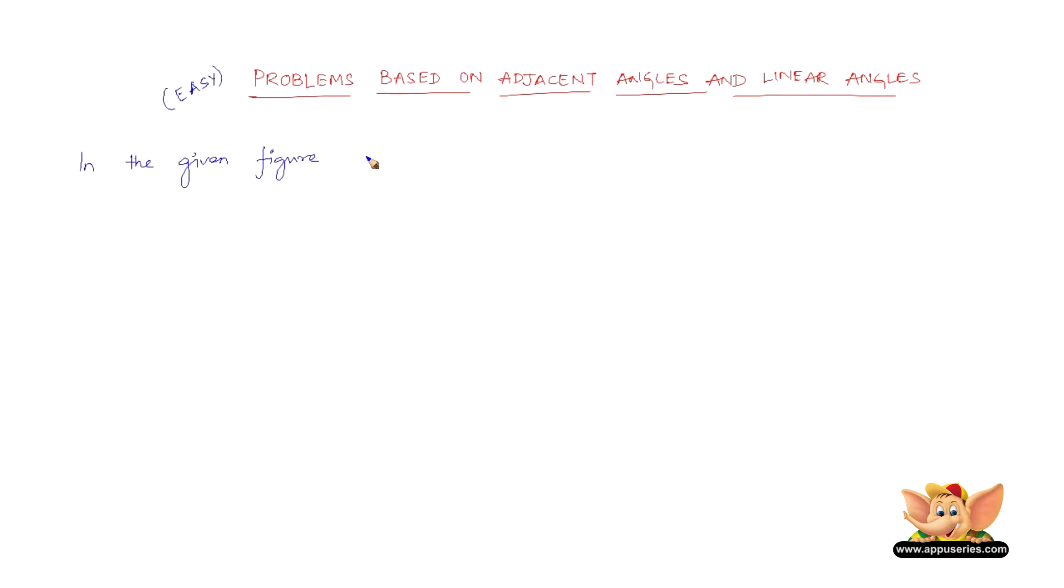The question here is: in the given figure OA and OB are opposite rays. If x equals 75 degrees, what is the value of y?